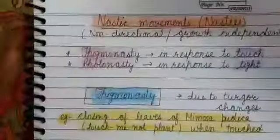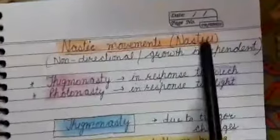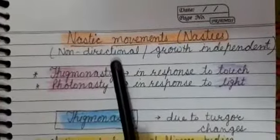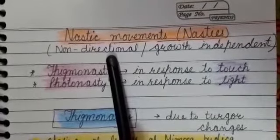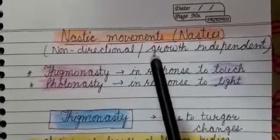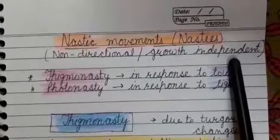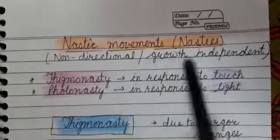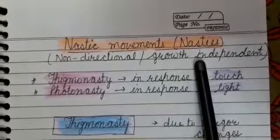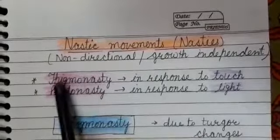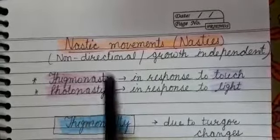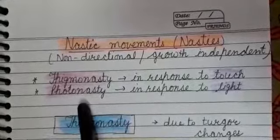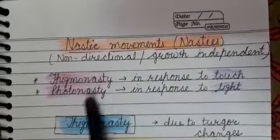This is all about tropic movements. Our last topic is nastic movements, also called nasties. These are non-directional because they do not depend on the direction of the stimulus, and they are growth independent — it is not necessary that these movements always take place due to growth. There are two types of nasties: thigmonasty and photonasty.